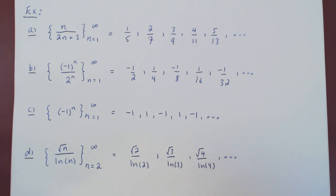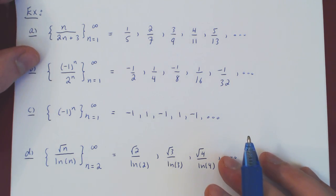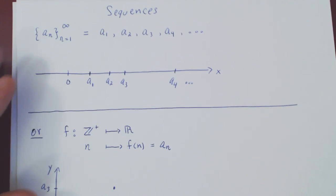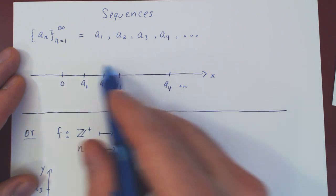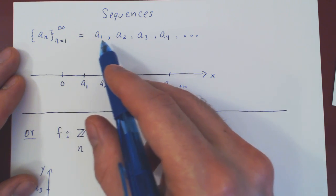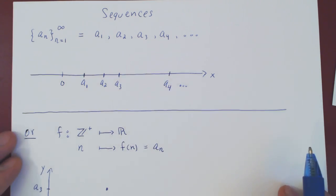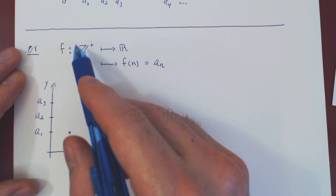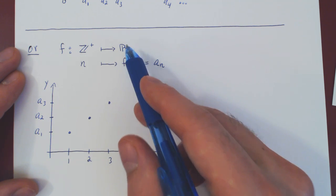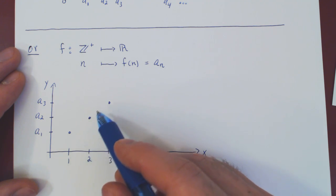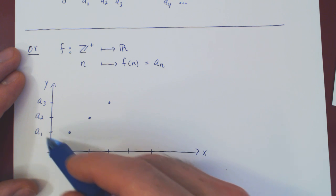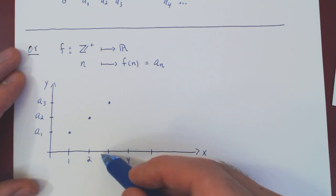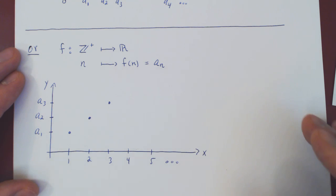That's really all that sequences are: infinite lists of real numbers. Always remember you have two ways to look at a sequence geometrically — you can list the terms along the real axis, or you can think of the sequence as a function from the positive integers to the real numbers and graph this discrete function, where above each integer the y-value is the corresponding term of your sequence.